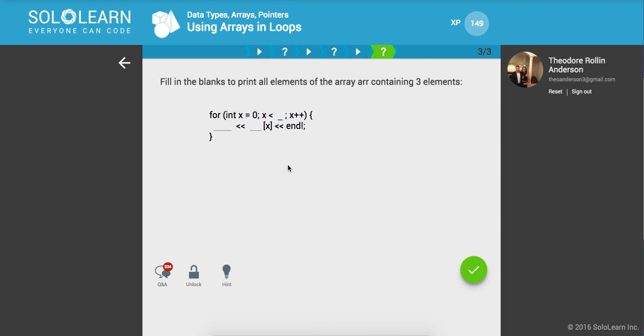Fill in the blanks to print out all elements of the array containing three elements. So, for X equals 0, X is less than 3, and we want to say count, console output, and what do we want to do? We want to do R of X, and then end line.